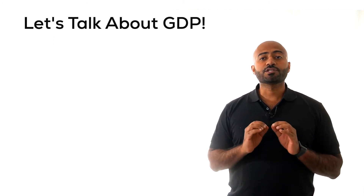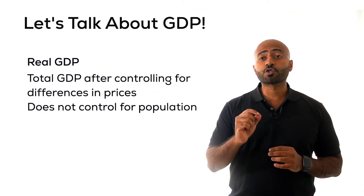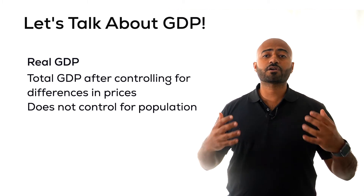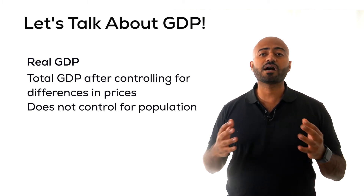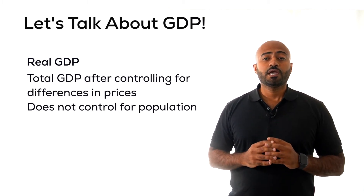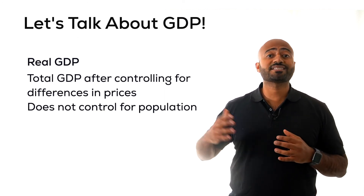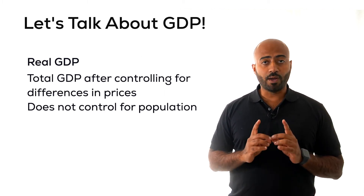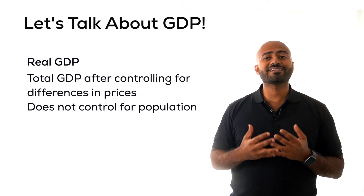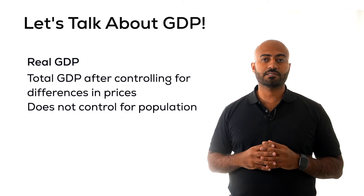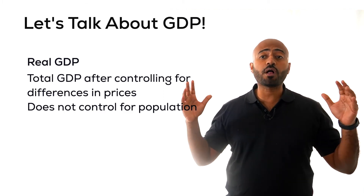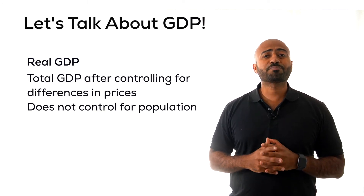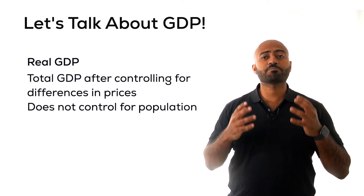Second is real GDP. Real GDP controls for differences in the price level, so it allows us to compare across different places with different cost of living and different prices. It also allows us to compare across time since this measure eliminates price differences. However, the issue with real GDP is that it does not control for population sizes. Real GDP allows us to measure the overall production while controlling for prices, but does not allow us to understand production per person.